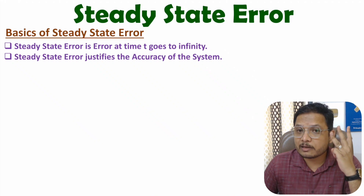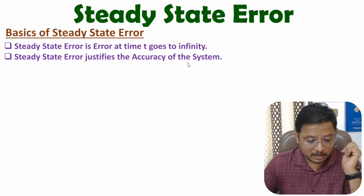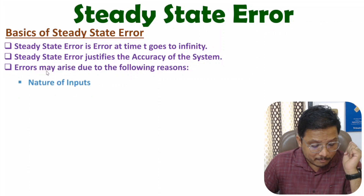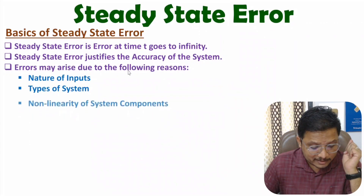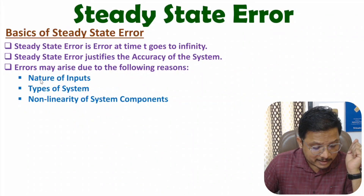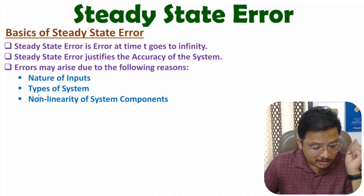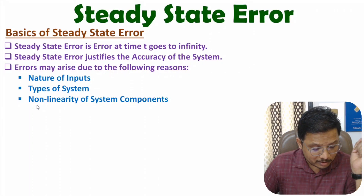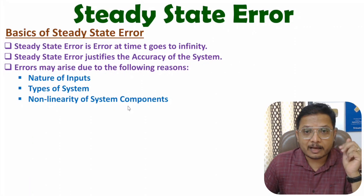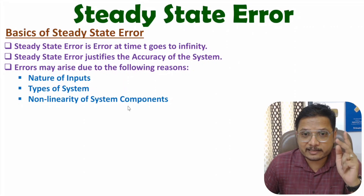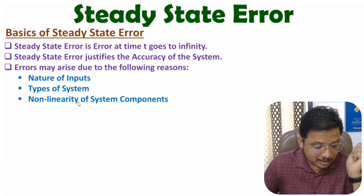Here I will discuss three parameters on which steady state error depends. Steady state error may arise due to the following reasons: first, based on the nature of inputs; second, based on the types of system; and third, based on non-linearities of system components. After the derivation, I will explain how steady state error depends on these three reasons.